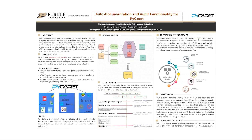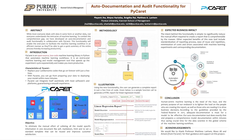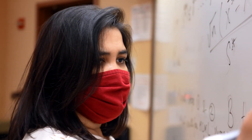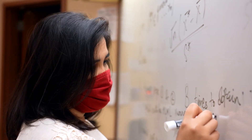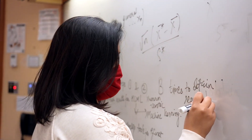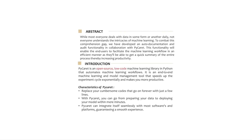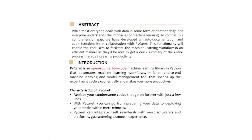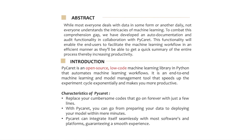So the project is basically an auto-documentation and audit functionality. What it enables you to do — the end result — is: right now Python has many, many functions and you can do wonderful things with it. We created a function that you just call a single function and it will create a report for you that you can present to anybody in a board meeting.